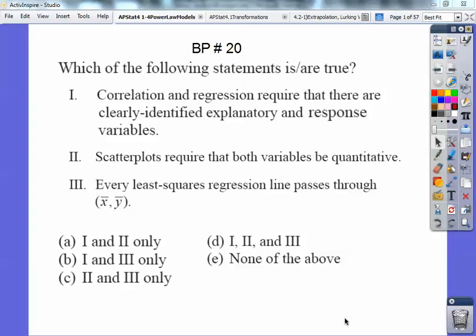Well, correlation does need an explanatory and response variable, but this clearly identifies a pretty strong descriptive right there. So I don't think it's choice one. Scatterplots require both variables to be quantitative, that's true, and every least square regression line passes through the ordered pair, the average of your x, the average of your y's, that's true also.